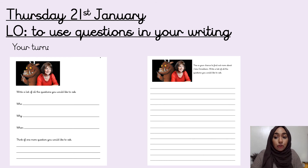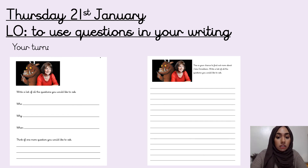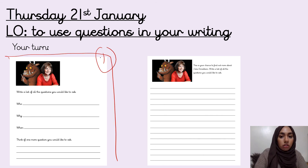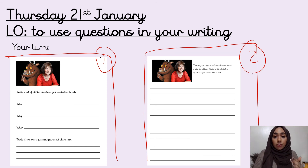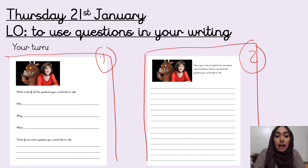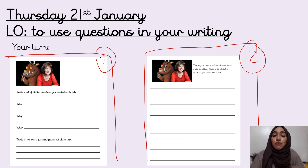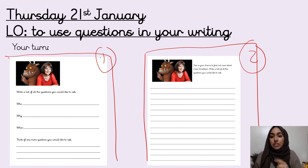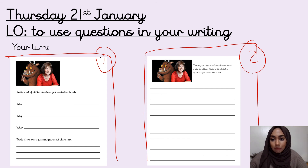Here is your task for today: you are asking Julia Donaldson some questions to find out more about her, and you can use these when you write your letter. There are two pages — you only need to do one of them. Page one has sentence starters: 'who,' 'why,' 'when,' so you just need one question for each — four questions total. Page two has lots of lines for you to come up with your own questions and ask as many as you like. Have lots of fun and we can't wait to see your work on Seesaw. See you all tomorrow, bye!